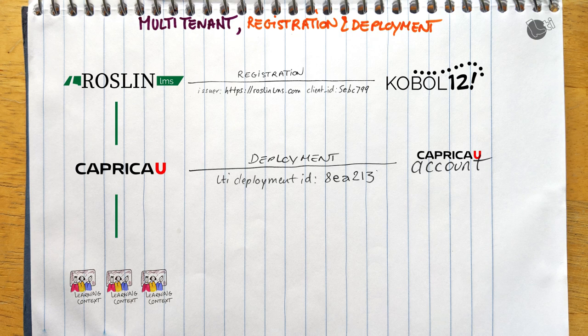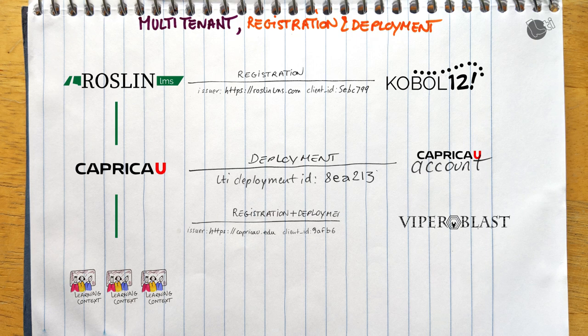Let's see in our example how that would work. In this example, Caprica U would like to use a simulation called Viperblast. Viperblast has not been registered with RoslynLMS as a learning platform. However, Viperblast will be registered directly with Caprica U, so the issuer that Viperblast will receive will be CapricaU.edu, not RoslynLMS.com. The OAuth 2 client ID will also be generated scoped to the CapricaU.edu issuer. A deployment ID will also be generated at the same time, because here the registration and deployment happen simultaneously. But there will never be two deployments for that OAuth 2 client ID — meaning never two deployments for that registration.